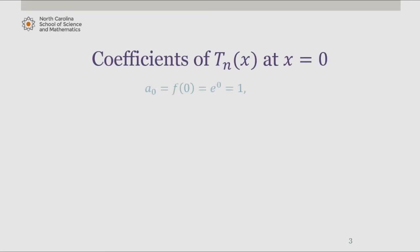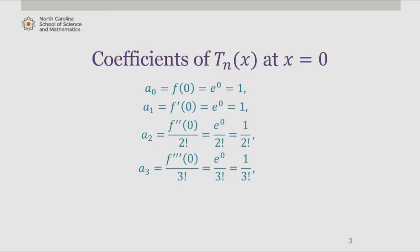So we have the following coefficients of this nth degree Taylor polynomial at x equals 0. And in general, we can write that as 1 over n factorial.